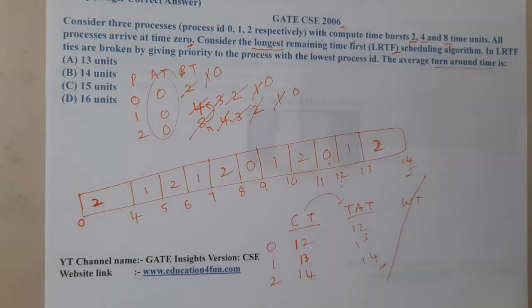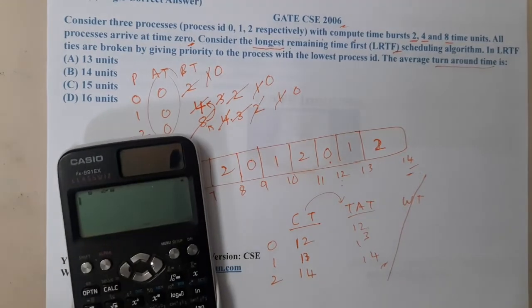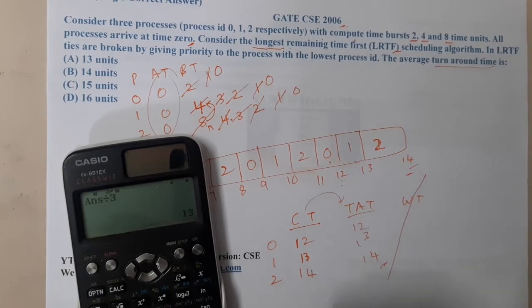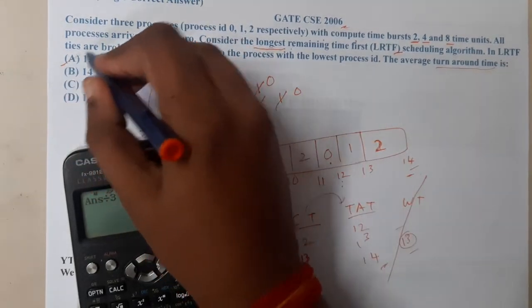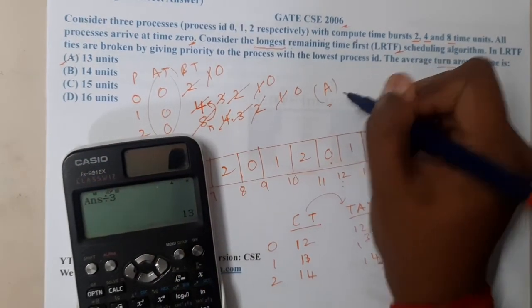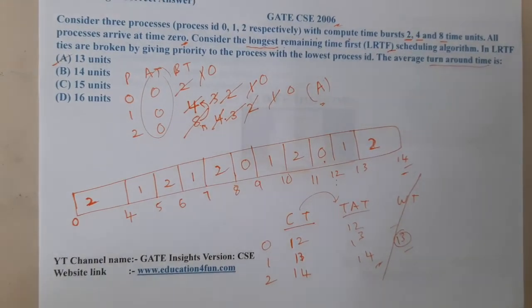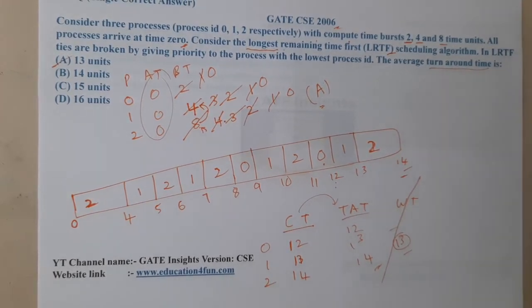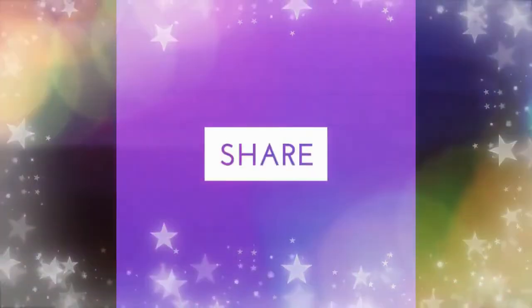The average turnaround time is (12 + 13 + 14) / 3 = 13. So the average turnaround time is 13, and option A is most probably the correct answer. This is quite an interesting question because it introduces a new type of algorithm. I hope everyone got a clear idea. In the next lecture, let us continue with the next question. Thank you. Like, share, and subscribe for more awesome videos.